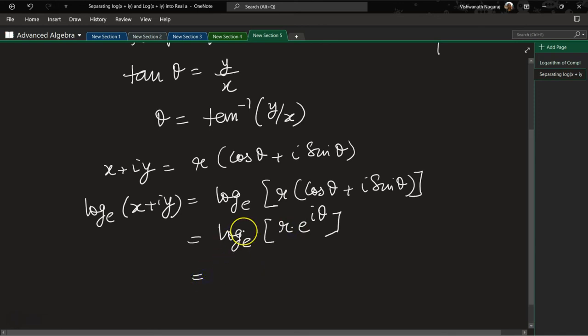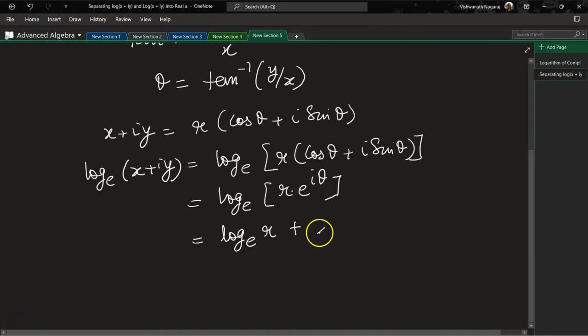Now since it is a product, based on log properties, we can write it as log_e(r) + log_e(e^(iθ)). Now we can write this as log_e(r) plus the exponent we can bring it to the front: iθ log_e(e).